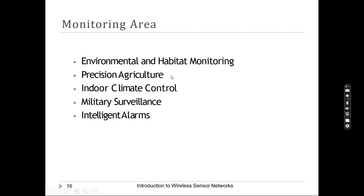Precision agriculture is another important monitoring area application. For example, in agriculture, if the water level and soil health are monitored and nutritional deficiency is inspected, appropriate actions can be taken. If water is not available, irrigation can be triggered. Various types of sensors can perform these tasks, and from the data collected we can take appropriate action.